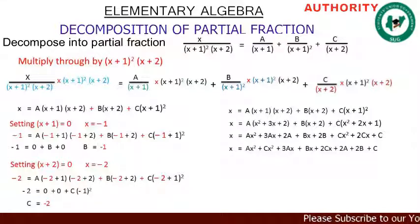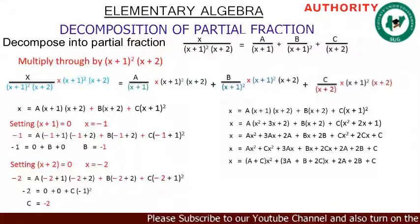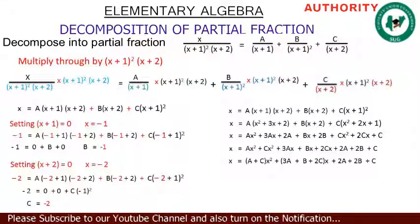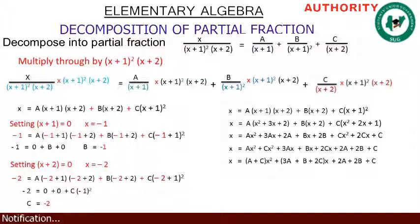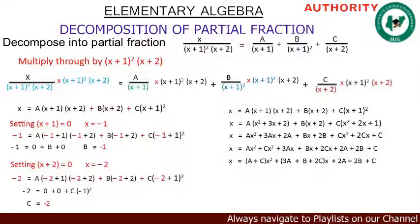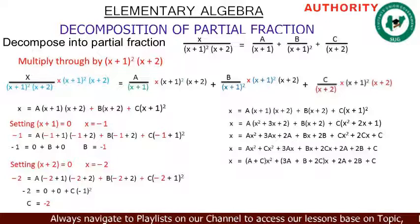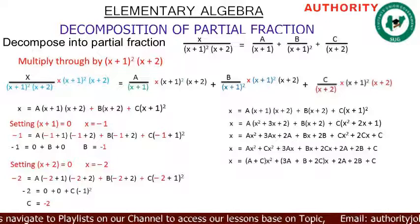Arranging by degree: x = (a+c)x² + (3a+b+2c)x + (2a+2b+c). This method is called comparing coefficients. So we have x = (a+c)x² + (3a+b+2c)x + (2a+2b+c).